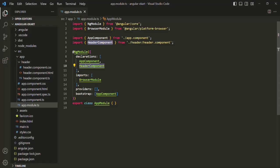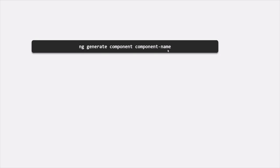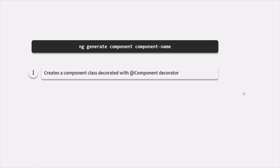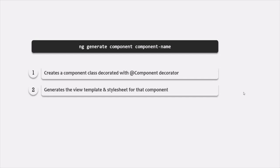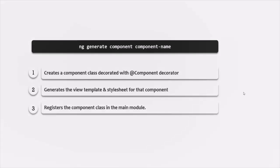We can also create a component using Angular CLI. For that, we simply need to run the command: ng generate component and then the component name. What this command will do is it will first create a component class decorated with @Component decorator, generate the view template and stylesheet for that component, and also register that component class in the main module. So we don't have to do anything manually — everything will be taken care of by Angular CLI.